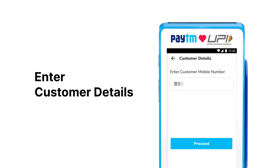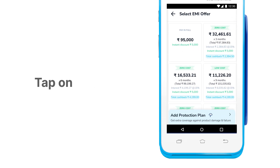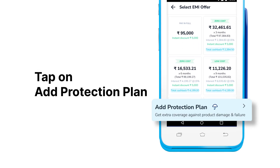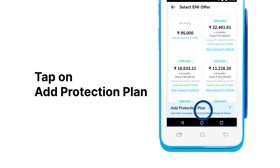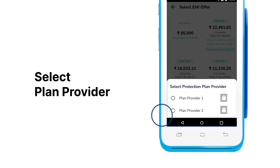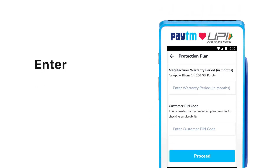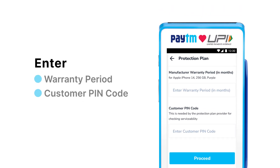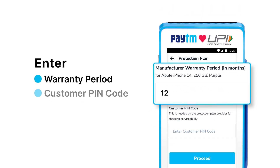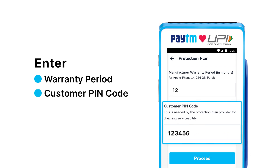Enter the customer details. Tap on Add Protection Plan. Select Plan Provider. Enter the required details such as warranty period and customer pin code.